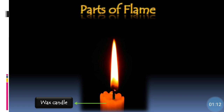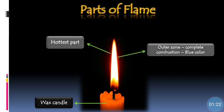Now let's move on to different parts of a flame. Here you can see a candle which is lighted. The first part is the outer zone, which is the outermost part of a flame. It is formed due to the complete combustion of the fuel. It will be blue in color and it is the hottest part of the flame.